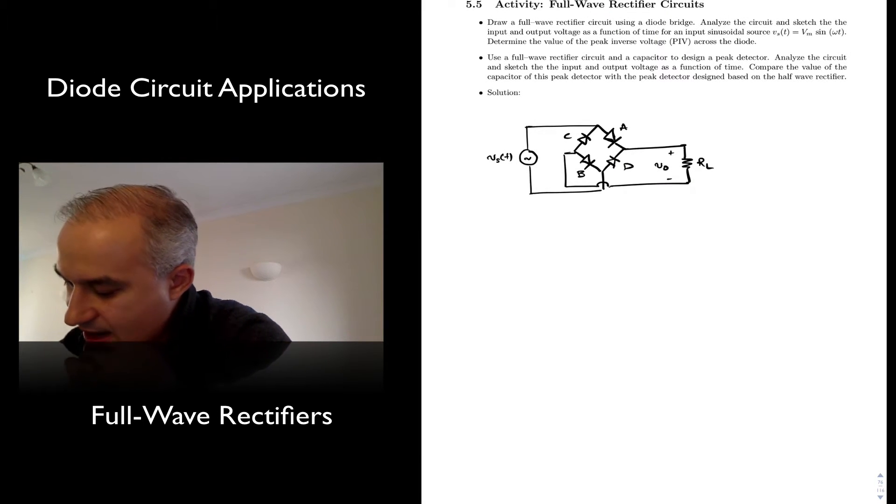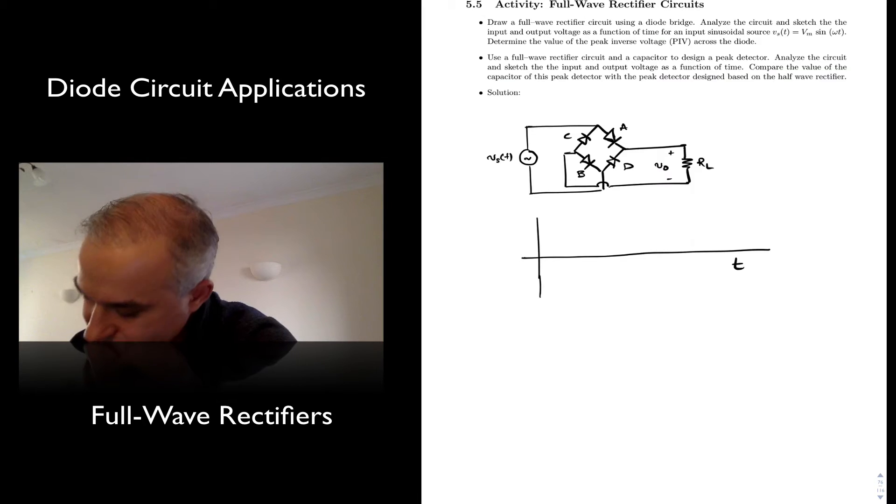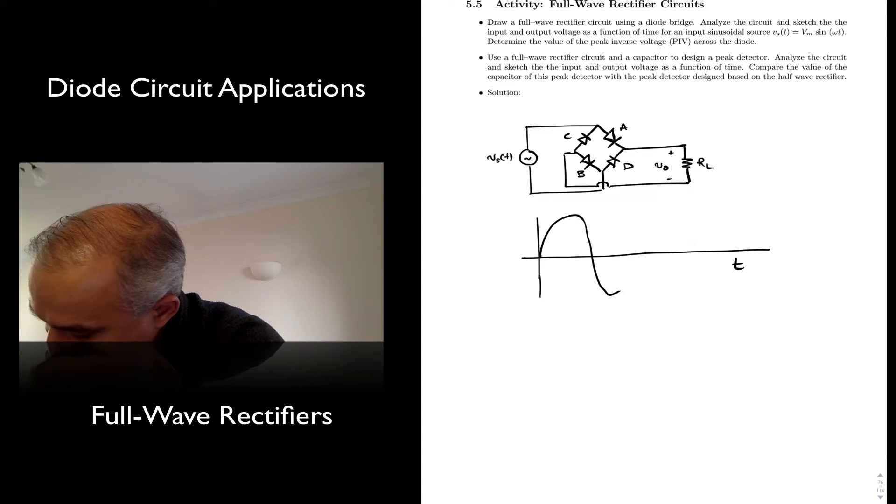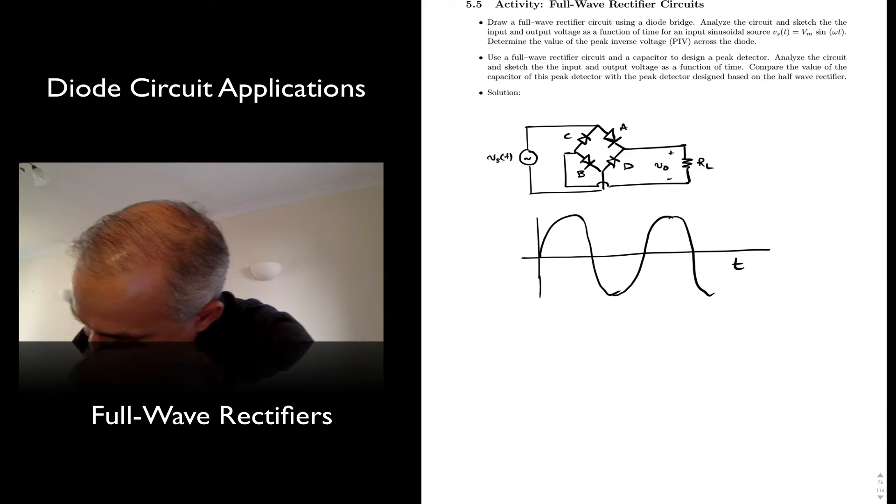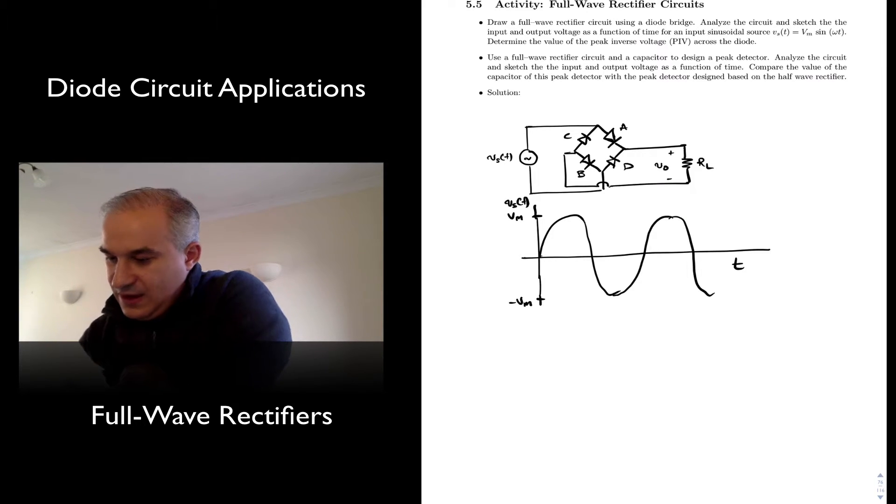And see what happens for an input waveform, the sinusoidal. So just a couple of cycles here. This is our input, Vs of T. This is the magnitude, positive magnitude. Negative.